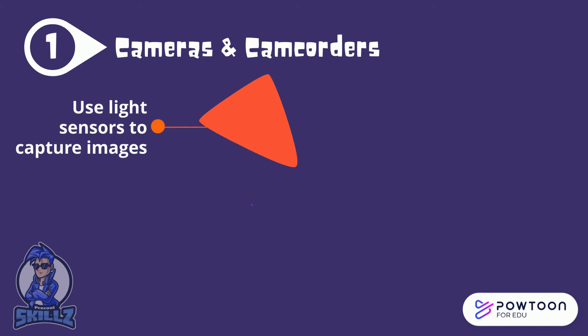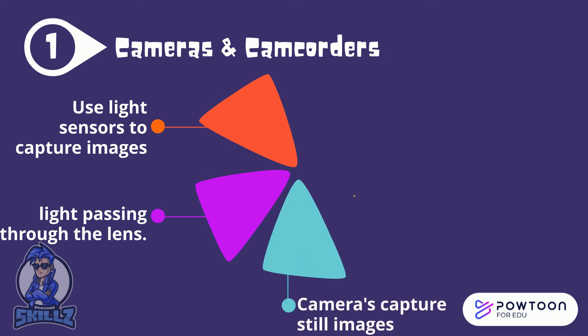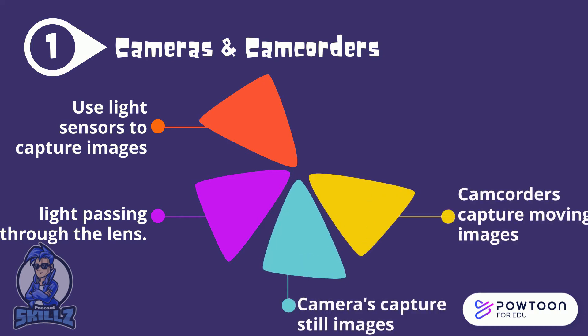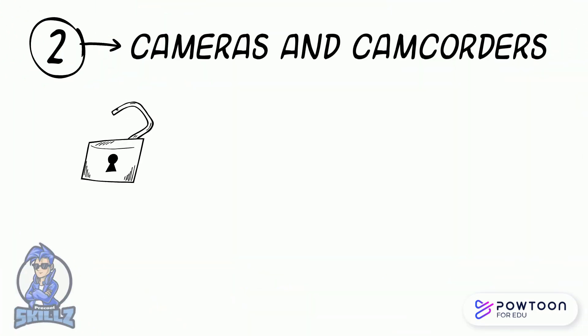Cameras and camcorders: digital cameras and camcorders use light sensors to capture images formed by light passing through their device's lens. Traditionally, cameras are used to capture still images and camcorders to capture moving images. The quality of the image captured depends on the quality of the lens, the image processor, and the resolution.